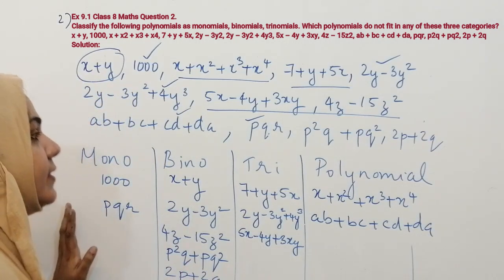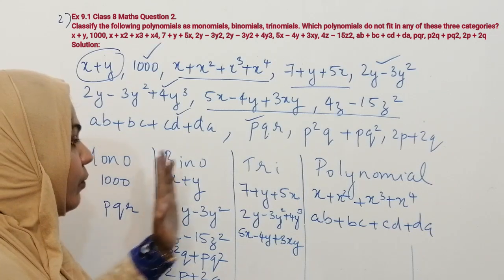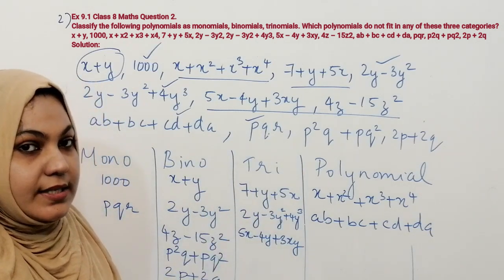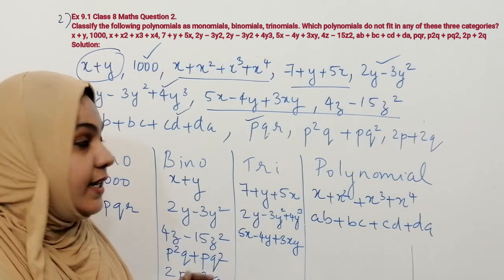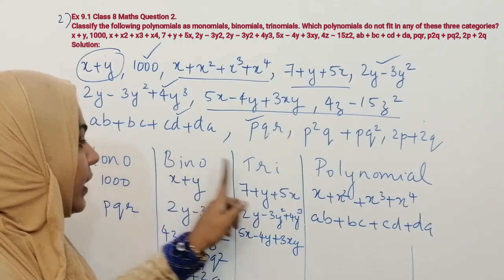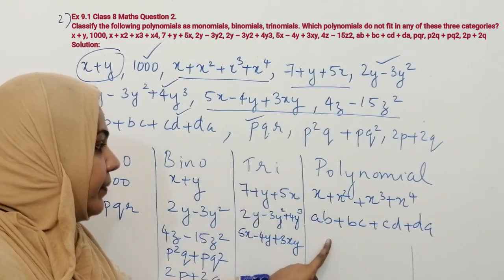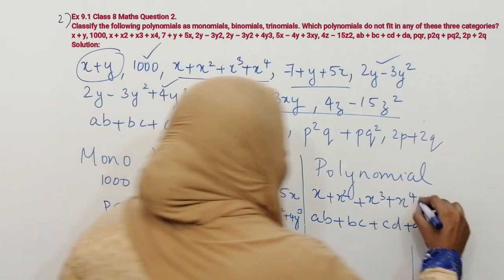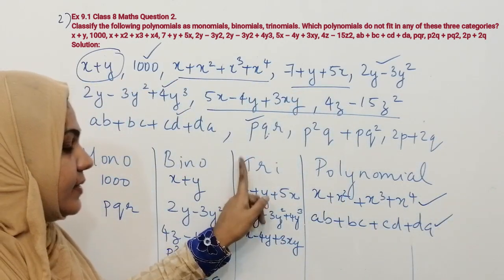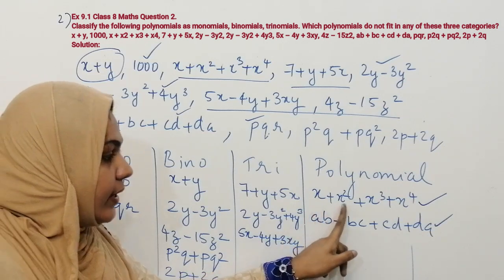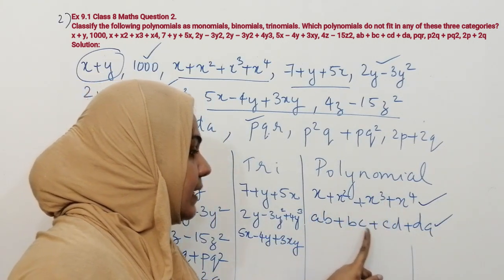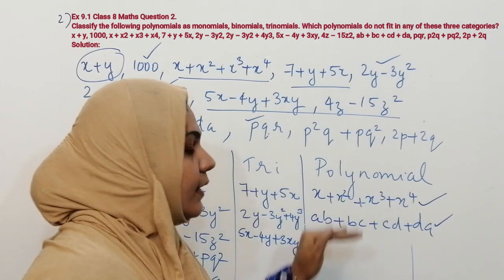We have categorized all expressions into monomial, binomial, trinomial, and polynomial. The second part of the question asks which polynomials do not fit in any of these three categories. The answer is: x plus x squared plus x cubed plus x to the power 4, and ab plus bc plus cd plus da — these are the polynomials that do not fit in monomial, binomial, or trinomial.